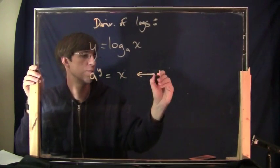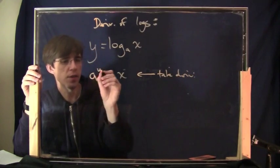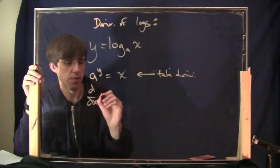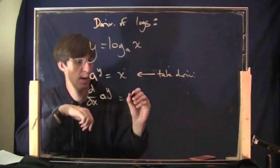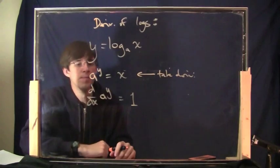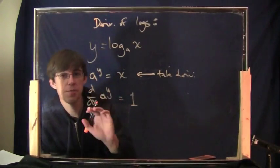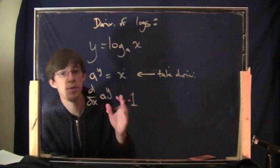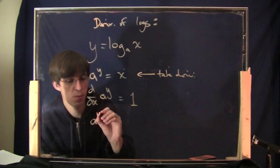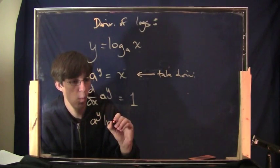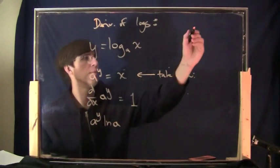We can now take the derivative. On the left side, it looks like the derivative of a to the y, and on the right side you take the derivative of x and you get 1. What is the derivative of a to the y? This is a formula we know from last time. The derivative of a to the x is a to the x times ln of a. Did I say it wrong before?